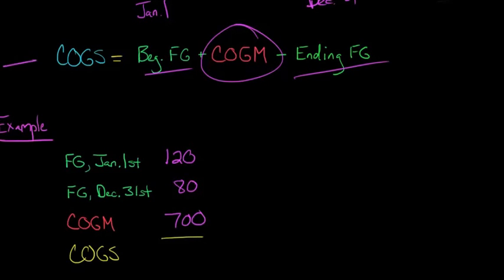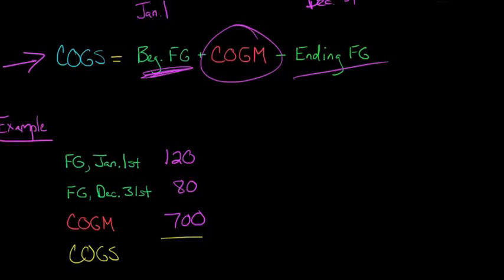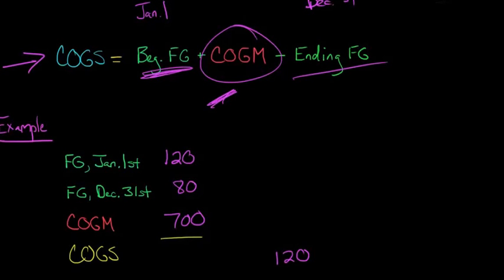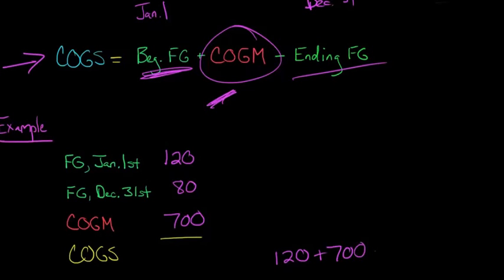Now we just follow this simple formula. What's the beginning finished goods? We've got $120. Now we add in the cost of goods manufactured. Then we subtract out what we're left with, which is the $80 in finished goods at the end of the year. And that gives us our cost of goods sold.